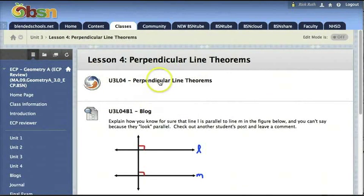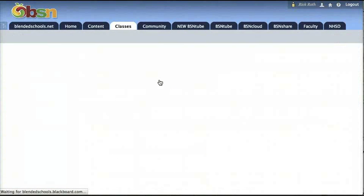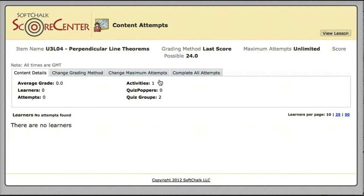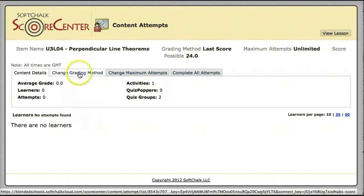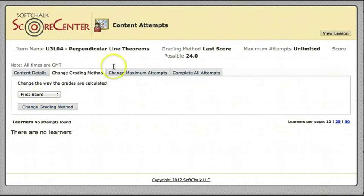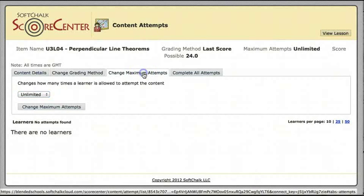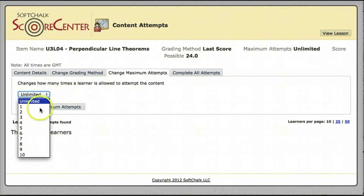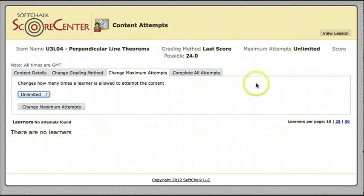When we get into the bulk of each lesson in the SoftChalk area, the teacher has total control through the SoftChalk Score Center, as you can see here. The teacher can change the grading method, because this lesson is total 24 points, so the activities in the lesson are worth points. And they can take the highest score. They can choose to grade it however they wish. They can give them unlimited attempts or whatever they choose there.